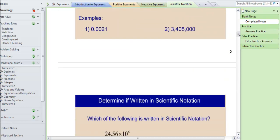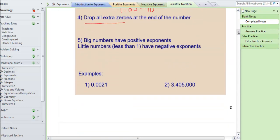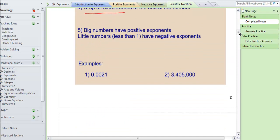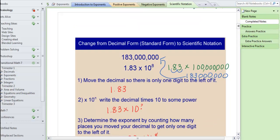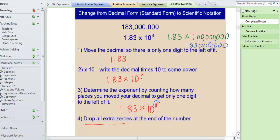So let's try a couple of examples. One thing to keep in mind is that big numbers have positive exponents. That's because we are multiplying by a big number, right? So 1.83, we have to multiply that times a big number to get up to 183 million. So our exponent has to be a positive exponent to make the 10 to some power be a big number, a thousand, a million, a hundred, whatever.